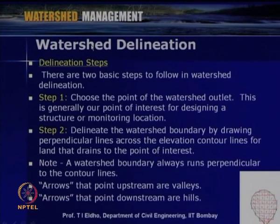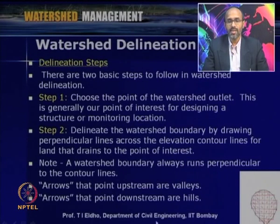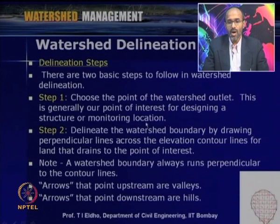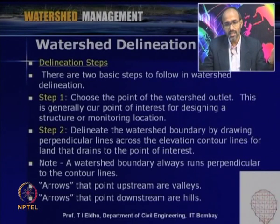Coming back to the manual procedure — steps to follow in watershed delineation: Step 1, choose the point of the watershed outlet, which is generally the point of interest for designing a structure or monitoring location. For example, if we are going to construct a check dam or a larger dam in a basin, the outlet is generally the preferred location. Then, delineate the watershed boundary by drawing perpendicular lines across the elevation contour lines for lands that drain to that point of interest.